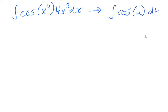So let's look at the integral of cosine x to the fourth times 4x cubed dx. Again, I notice this integral immediately in my head becomes the integral of cosine of u du.